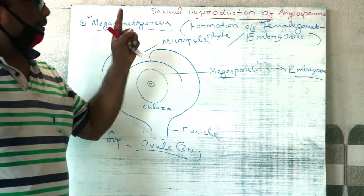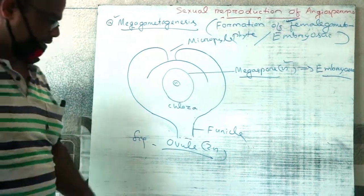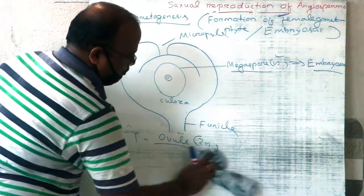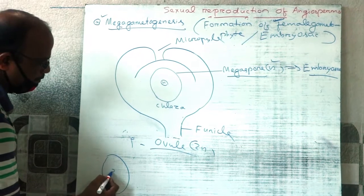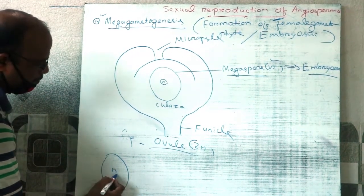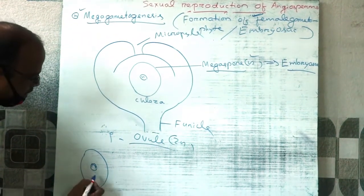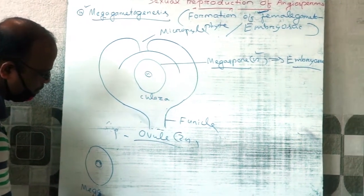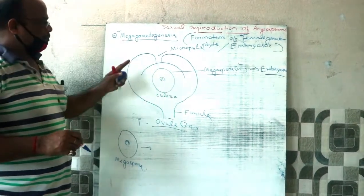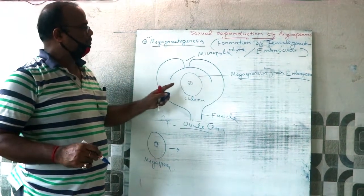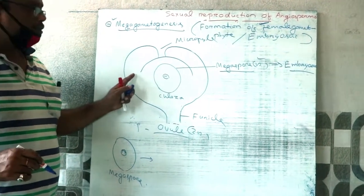The progression of the embryo sac formation is known as Megagametogenesis. The ovule is integument and contains the megaspore, hence it is indehiscent.